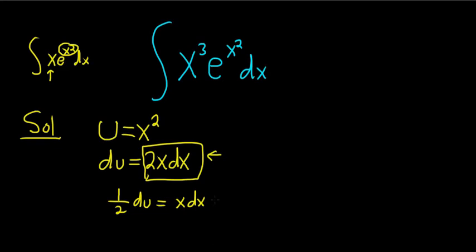And again the goal is to make this x cubed dx. So we'll do that by multiplying both sides by x squared. So we'll put an x squared here and put an x squared here. That gives us 1 half x squared du equals x cubed dx.